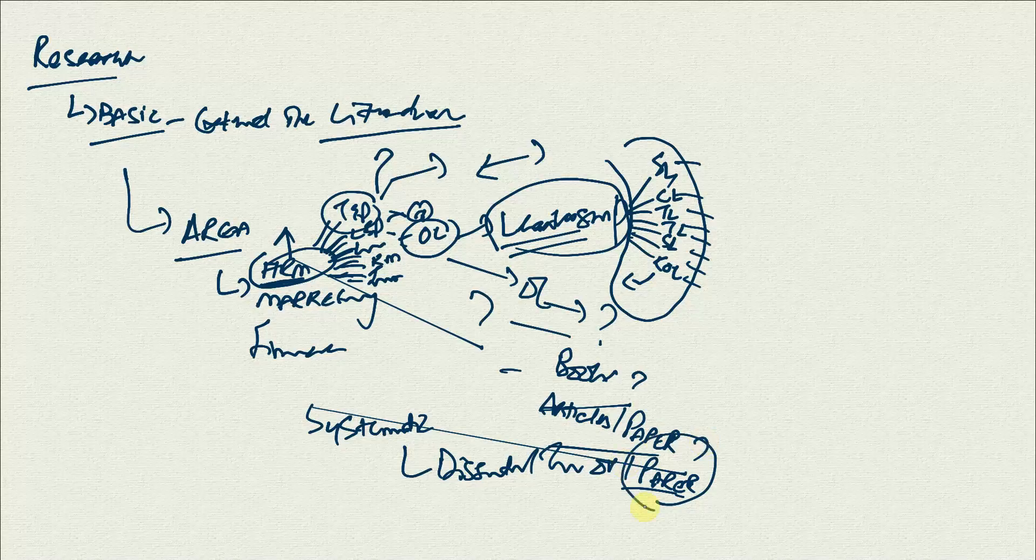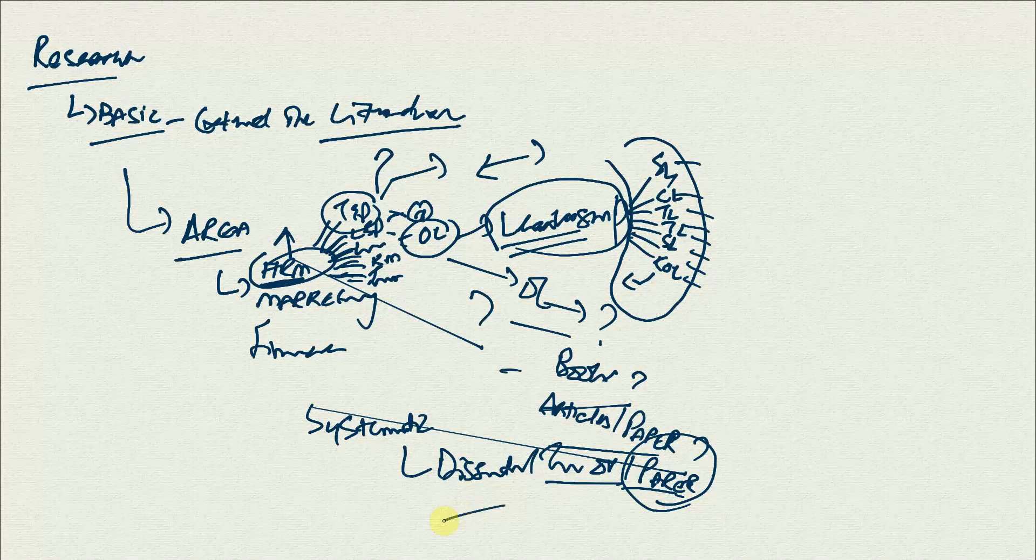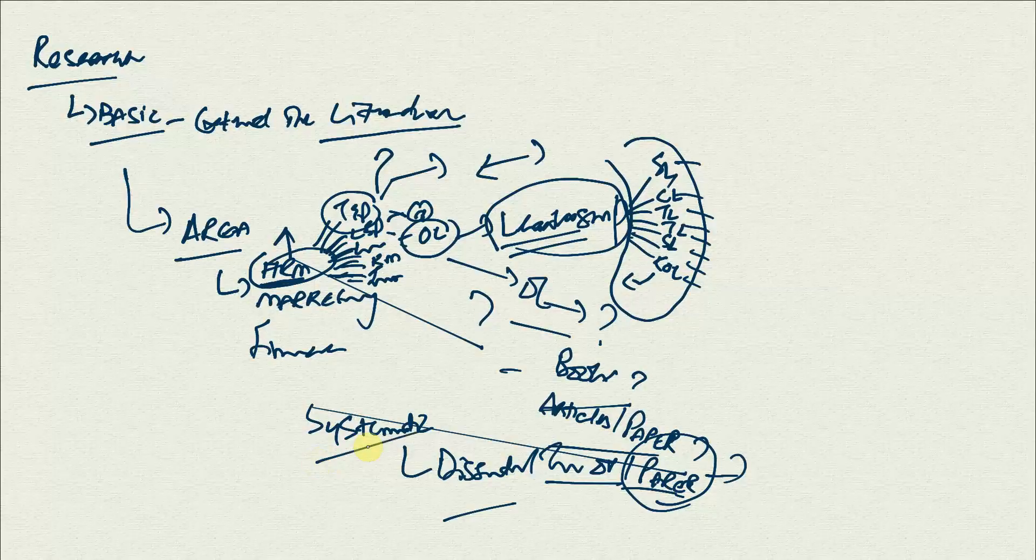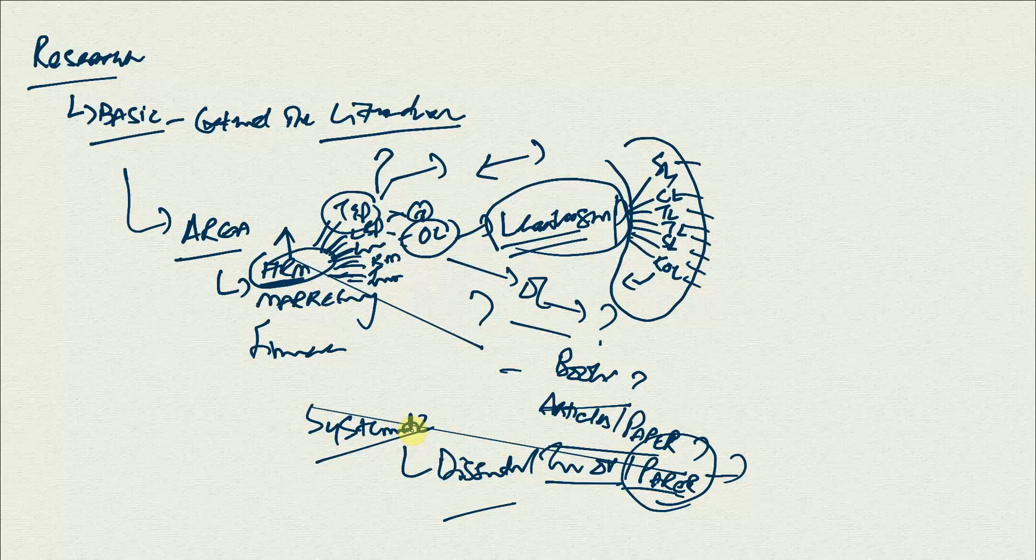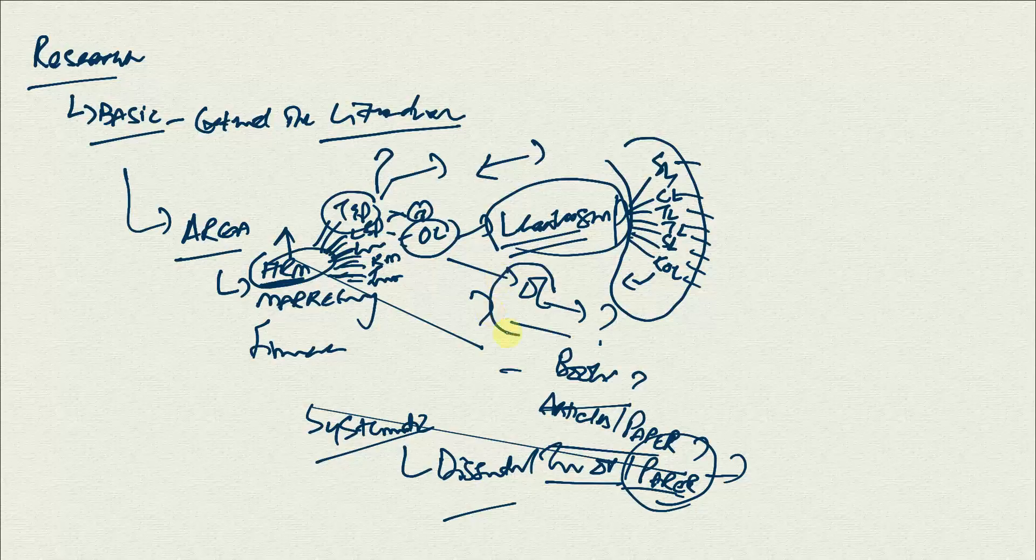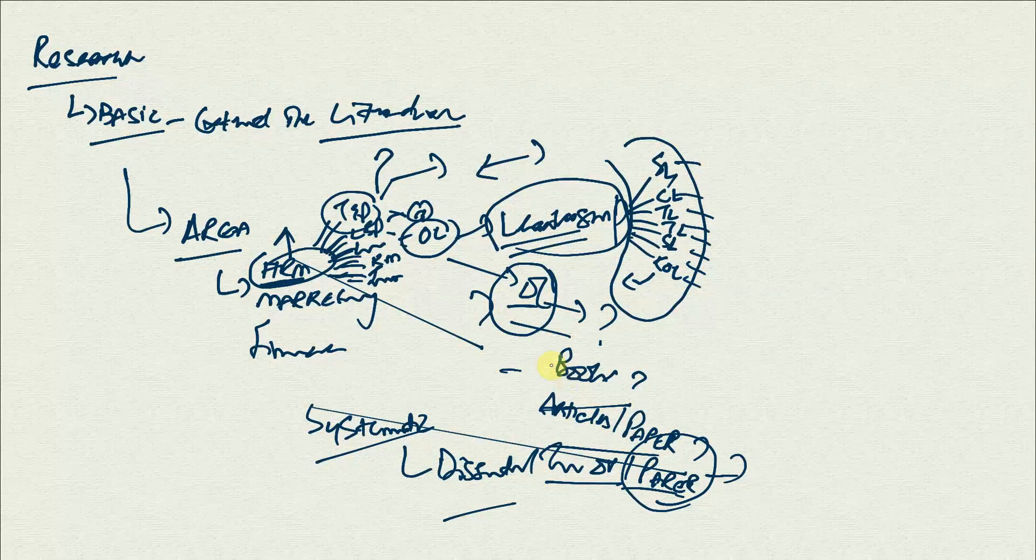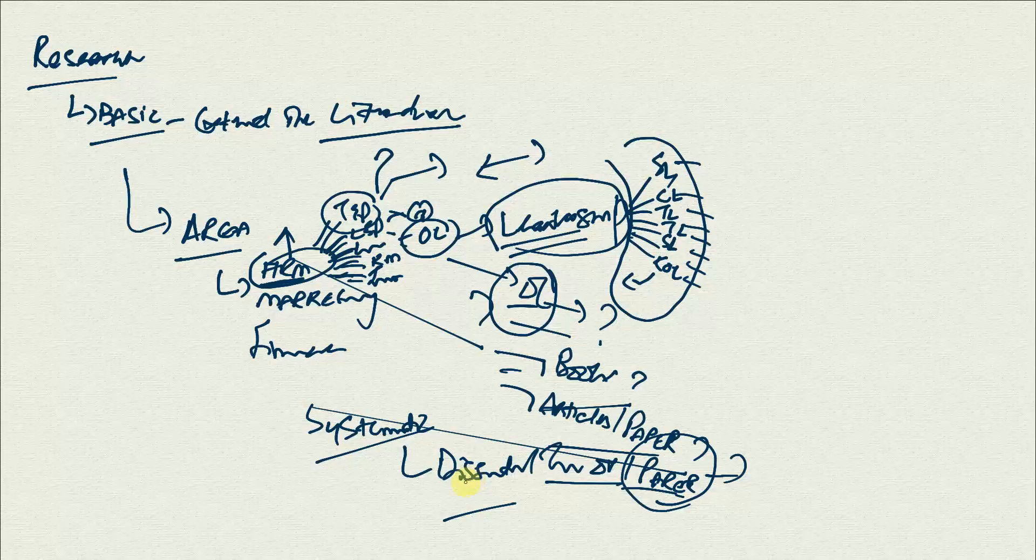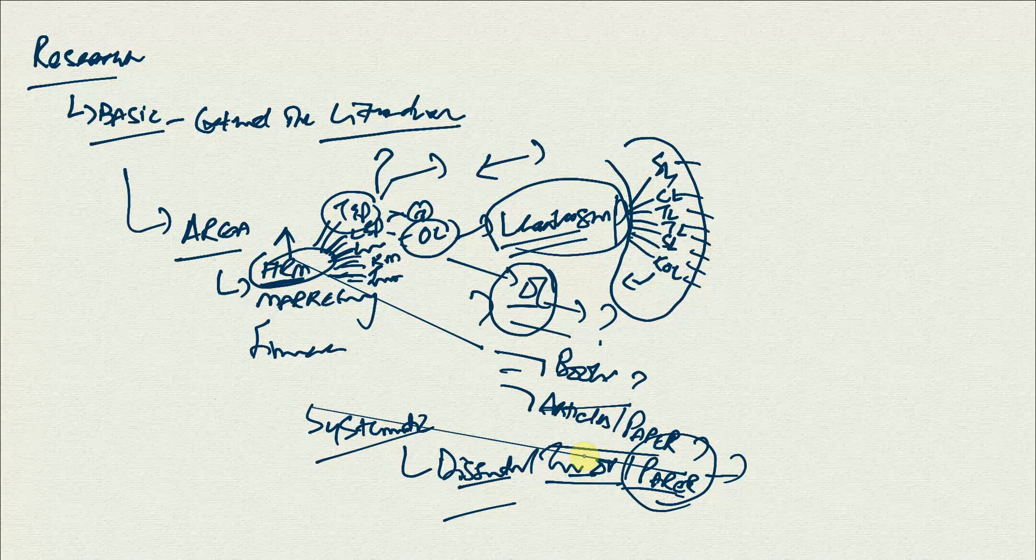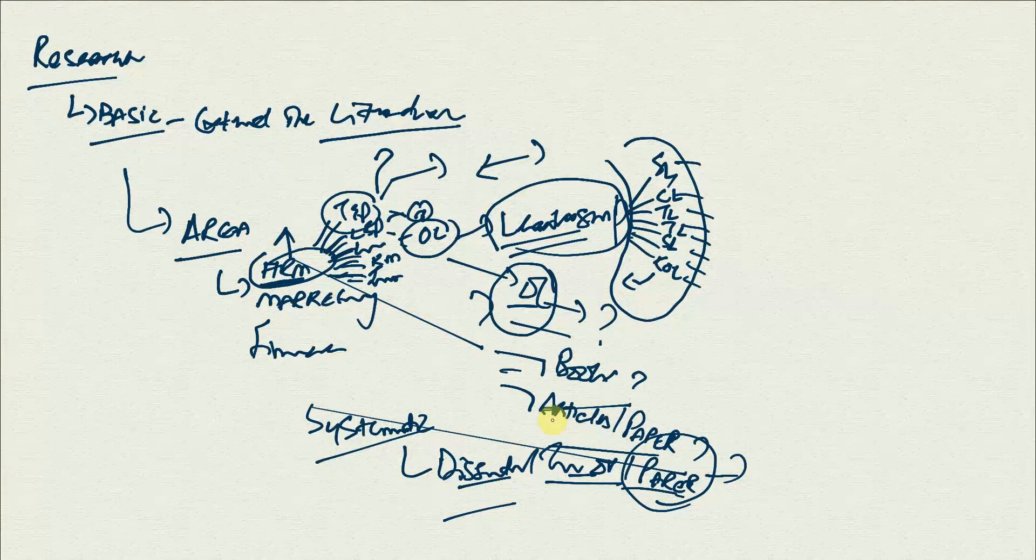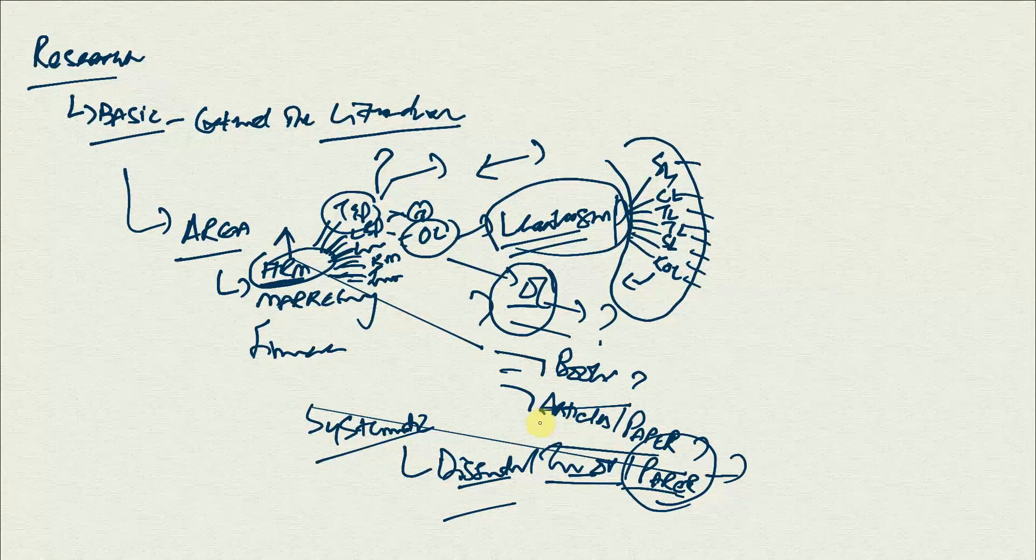That article, this thesis, or this dissertation is the outcome of this particular systematic process that we call research. So if I want to know about what's happening in this area, do I go for books, articles, papers, existing research done by someone else in my university, dissertations, or theses? Where do I look for?